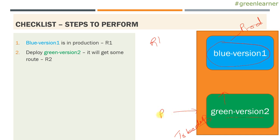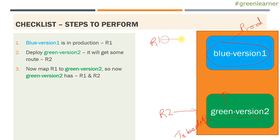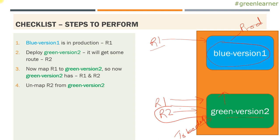Version two will get route two - some URL through which you can access it. Now what you have to do is map R1 to green version two. So you have to map this R1. As of now, when you hit this URL, it is accessing blue version one. The next step is to map R1 to this version also. Now R1 and R2 both are accessing green version two. So R2 belongs to green version, but R1 belongs to blue version and green version both. Next step: unmap R2 from green version two, so that only R1 is able to access both versions. When you hit this URL, it is going to hit blue version one and green version two both.